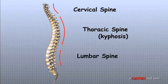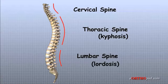The low back, also called the lumbar spine, curves slightly inward. An inward curve of the spine is called lordosis.